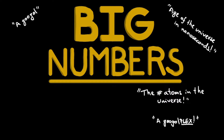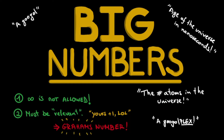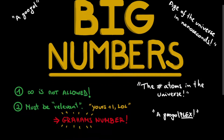Now before we dive in, there are of course two constraints. First, infinity is not a real number and therefore it is not allowed. The second constraint is that the number needs to be relevant, meaning that it needs to be a solution to a physical or mathematical problem. Otherwise, you could just say that you take this number and you add 1 to it. And to get to these magnificent numbers, let's start small and go through the different types of notation we have to represent large numbers.